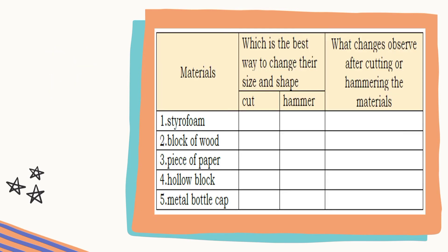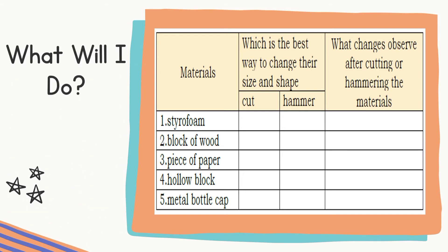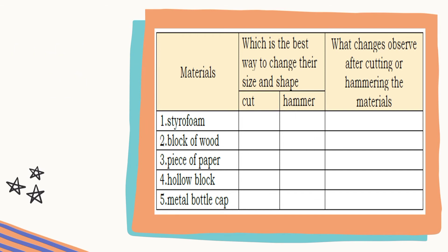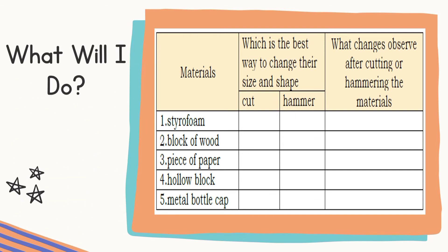After doing the activity, answer the following based on your observation. Observe what happened to the following materials: Styrofoam, block of wood, piece of paper, hollow block, and metal bottle cap. Which is the best way to change their size and shape? And what changes were observed after cutting or hammering the materials?